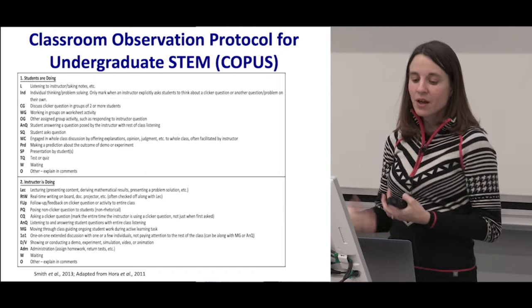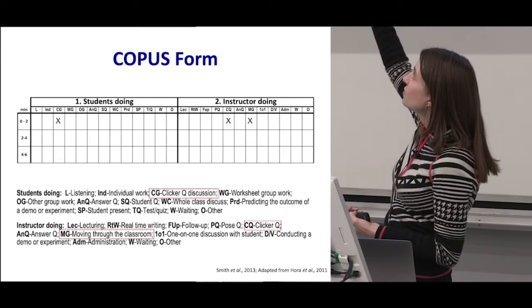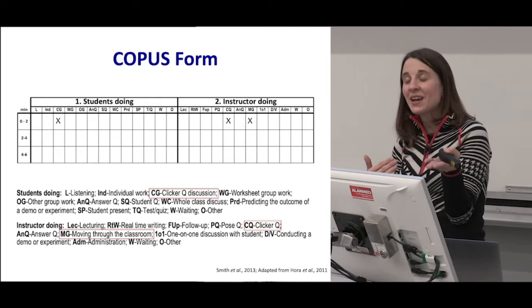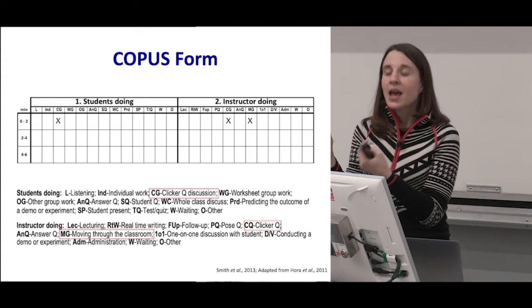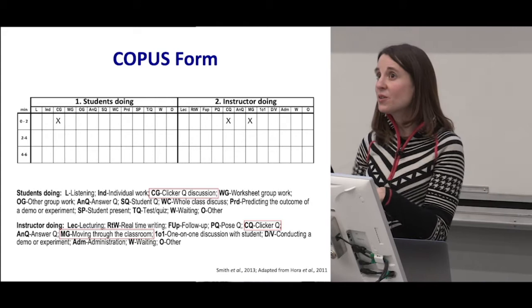The way you score classrooms with COPUS is that you divide the class into two-minute chunks, coding continuously — every two minutes you move on to the next line. You code what students are doing and what the instructor is doing throughout the entire duration of the class period. For example, when you were discussing the question I had up, you as students would be coded as CG for clicker question discussion, and as an instructor I would be coded as CQ because I asked the question, and then moving and guiding because I was moving throughout the classroom.